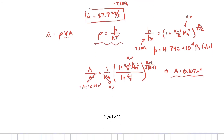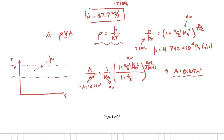Let me sketch a T-S diagram for this flow. It's simple since the flow is entirely isentropic. We start at stagnation conditions — stagnation temperature and stagnation pressure. We go through sonic conditions at the throat: T* and P*. Since it's all isentropic, we just move vertically downward. Then we continue to the state where the Mach number is 4, which is at an even lower temperature and pressure than at the throat. The flow moves along a single vertical line from stagnation down through the throat to the final state.